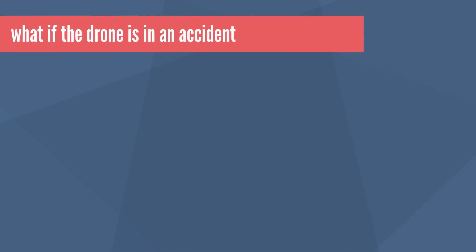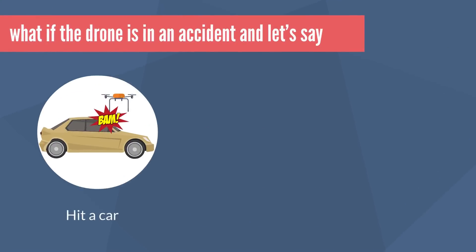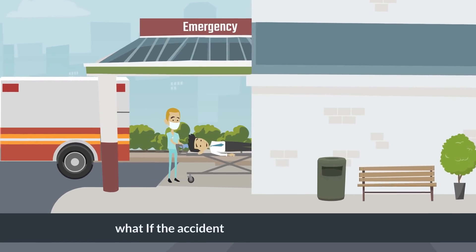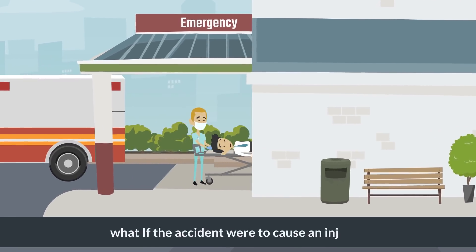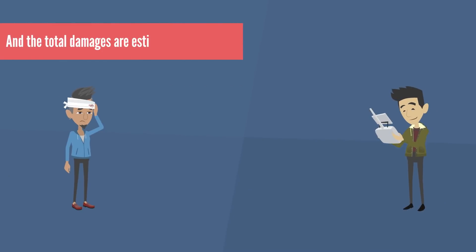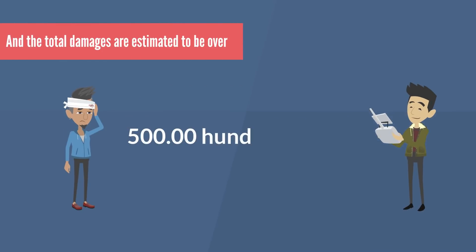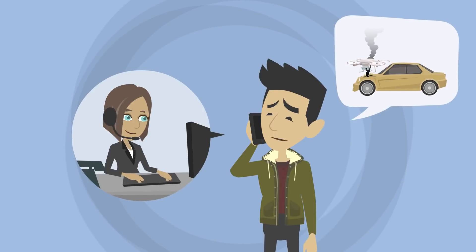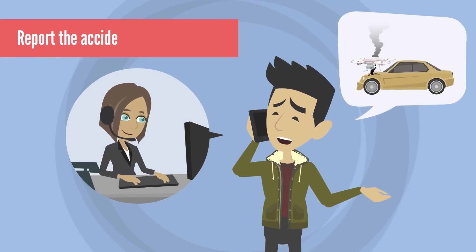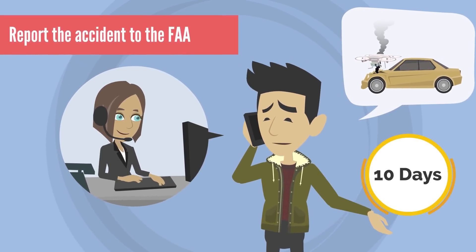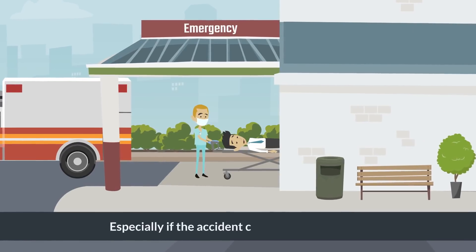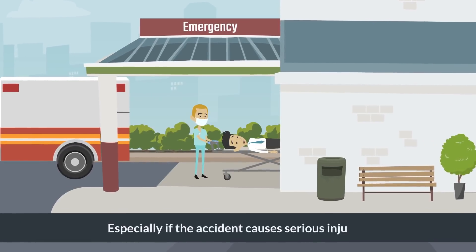Now you ask, what if the drone is in an accident and hits a car, or worse, a person? If the accident were to cause an injury and the total damages are estimated to be over $500, then you must report the accident to the FAA within 10 days, especially if the accident causes serious injury.